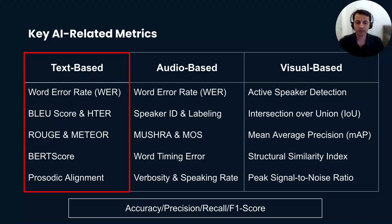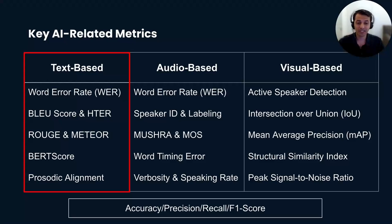ROUGE (Recall Oriented Understudy for Gisting Evaluation) is an evaluation metric for text summarization and machine translation. METEOR (Metric for Evaluation of Translation with Explicit Ordering) evaluates machine translation by considering both precision and recall. One of my favorites for machine translation is BERT score, which focuses on the similarity between reference and generated text using contextual embeddings, used for generative AI models trying to create meaningful and similar text to corpus data.